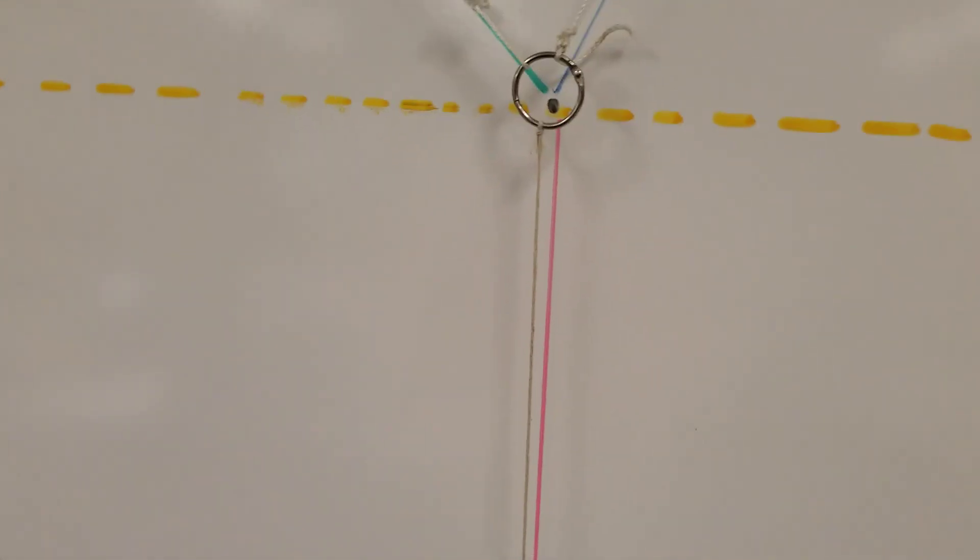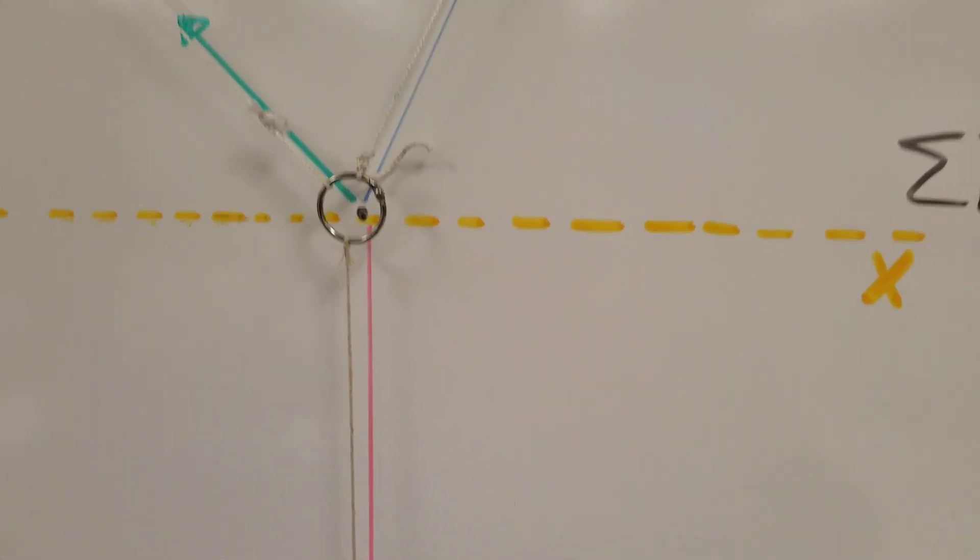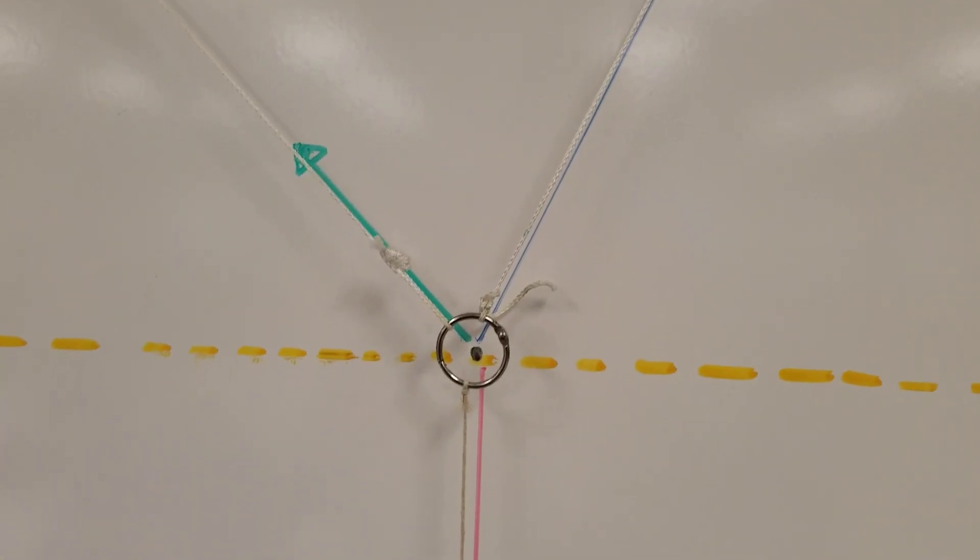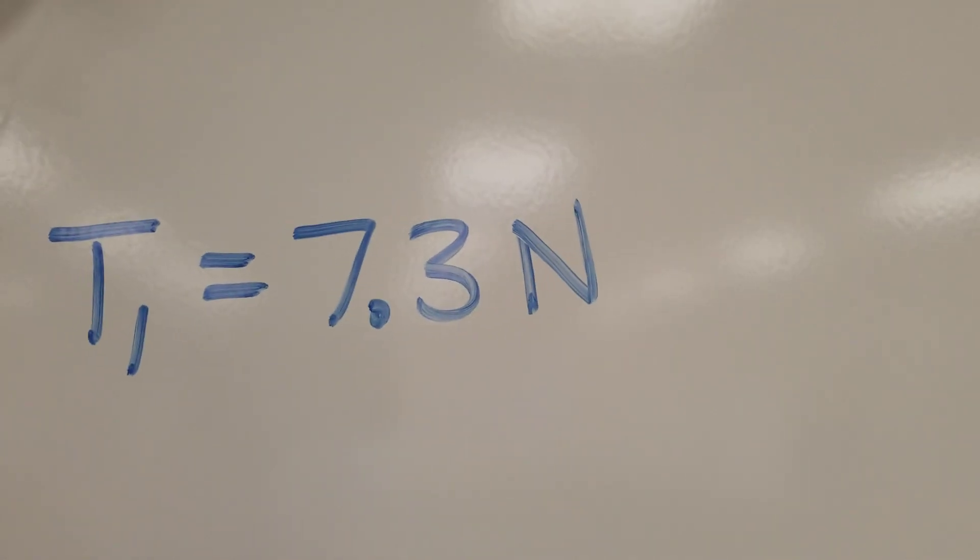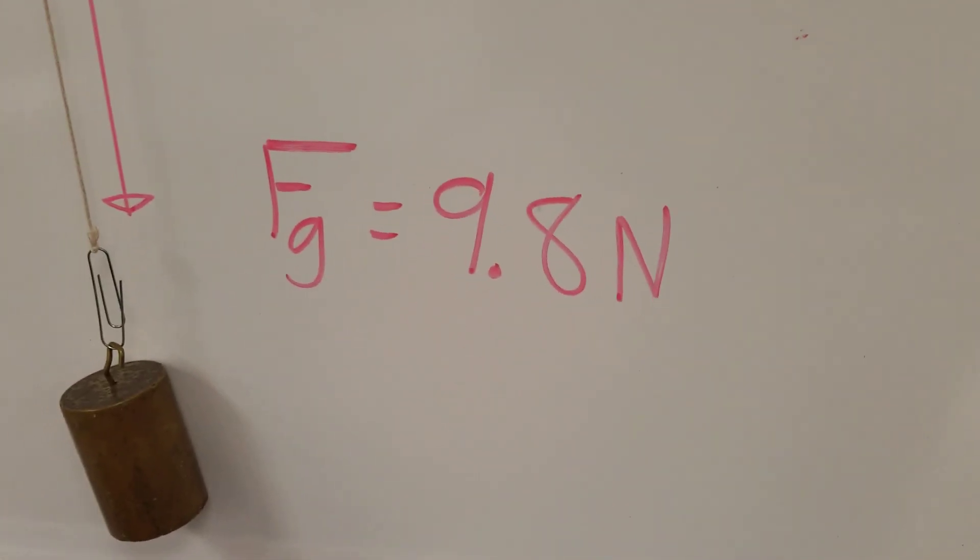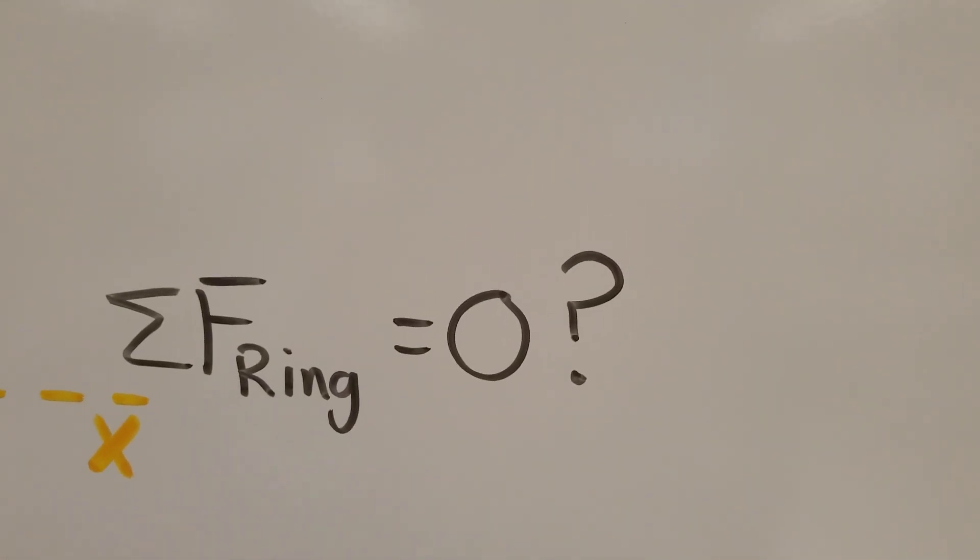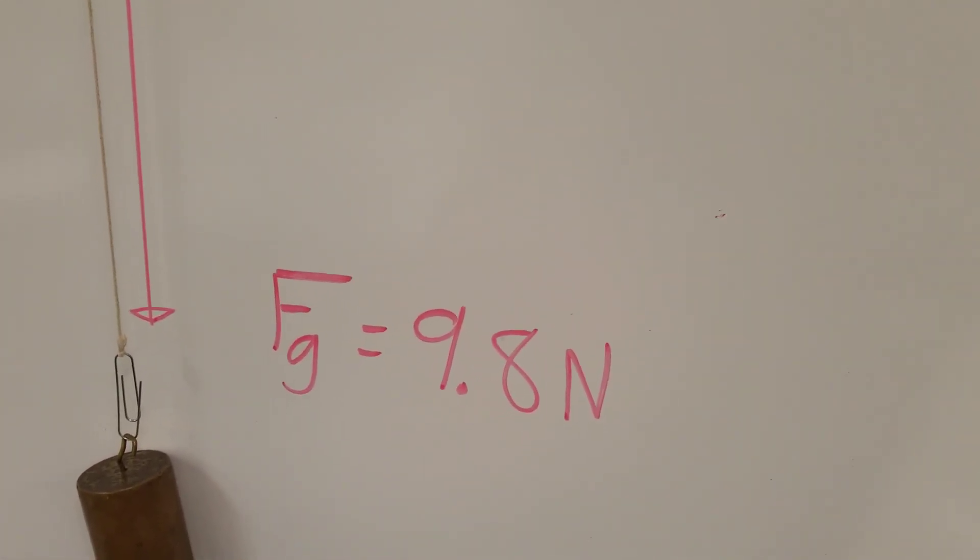Well then you realize that the direction matters and if vectors are in opposite directions they need to have opposite signs. So maybe you go well 4.5 and 7.3 are both going up, so if I add those together and then subtract 9.8, well does that equal zero? And well 7.3 plus 4.5 does not equal 9.8 so that doesn't add up to zero.